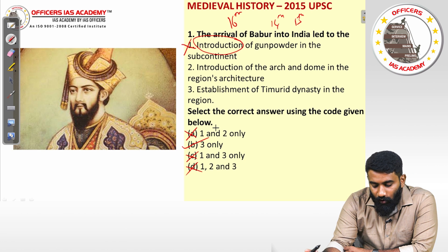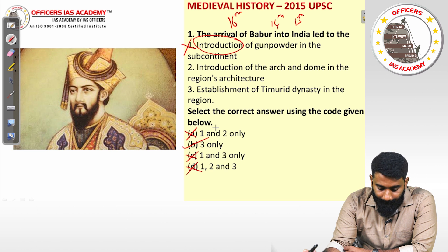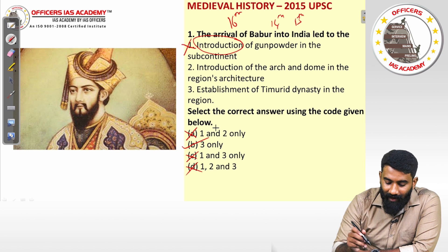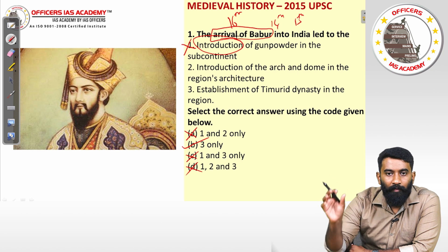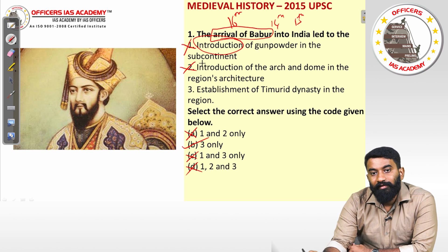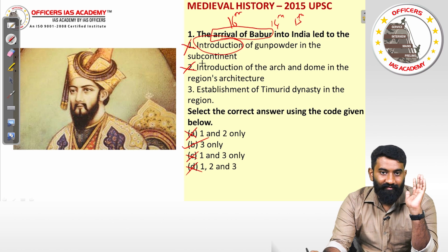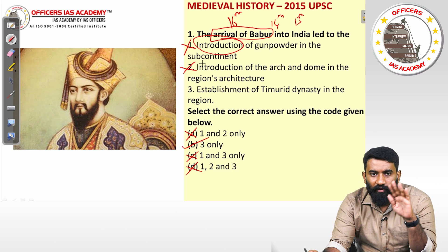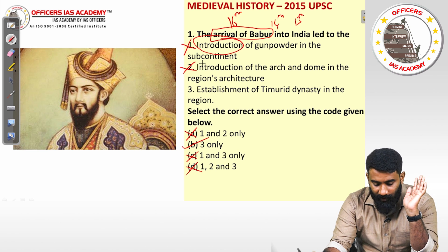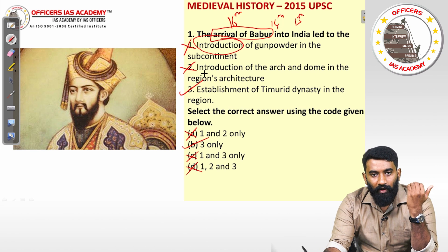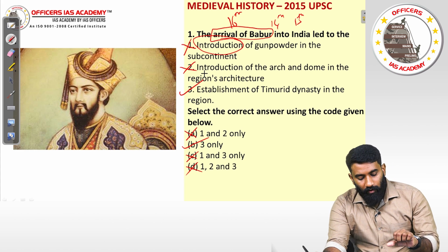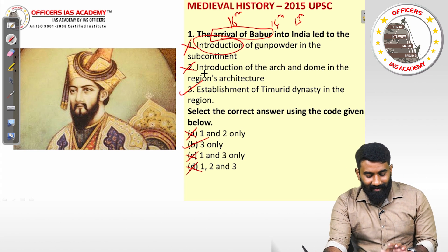Statement two: the introduction of arch and dome in the region's architecture with the arrival of Babar. Did Babar introduce arch and dome in India? The answer is no — it was introduced under the Delhi Sultanate, which came before the Mughals. Statement three: the establishment of the Timurid dynasty in the region — that is correct, since Babar is a descendant of Timur. So statements one and two are wrong, three is correct. The answer is option B.